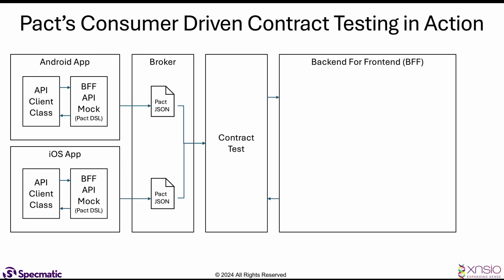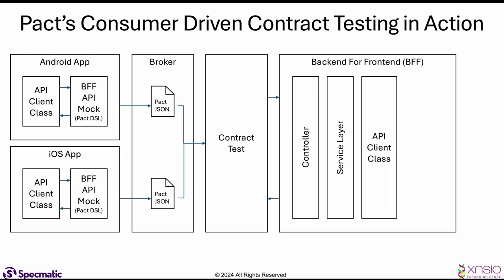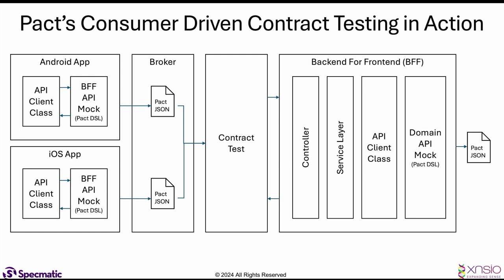In the backend-for-frontend application we have various layers: the controller, a service layer, and the API client class. The API client class talks to the BFF's dependency, which happens to be domain services. So we need a domain API mock, which again we define using PACT DSL. As a result of the unit tests for the API client class invoking the domain API mock, their interactions generate a PACT JSON produced by the BFF application.